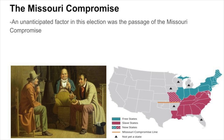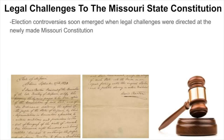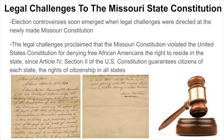An unanticipated factor in this election was the passage of the Missouri Compromise, which made the region of Maine, formerly a part of Massachusetts, a free state to allow for the admission of Missouri, which was labeled under the law as a slave state. Election controversies soon emerged when legal challenges were directed at the newly made Missouri Constitution. These challenges proclaimed that the Missouri Constitution violated the United States Constitution for denying free African Americans the right to reside in the state, since Article IV, Section II of the U.S. Constitution guarantees citizens of each state the rights of citizenship in all states.